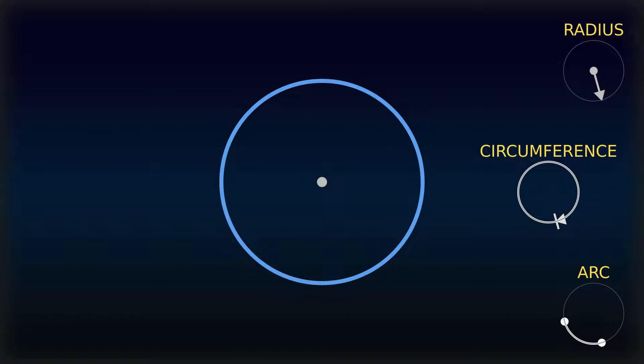Diameter is the line segment whose endpoints lie on the circle and that passes through the center, or the length of such a line segment. This is the largest distance between any two points on the circle. Its length is twice the length of a radius.